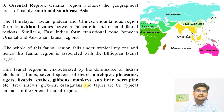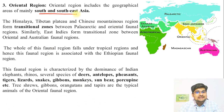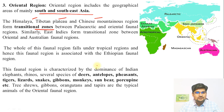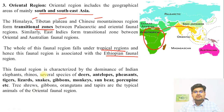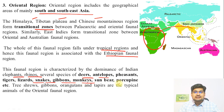The third region is the Oriental region. As said, orient means east, so South and Southeast Asia is included, with the Himalayan, Tibetan Plateau, and Chinese mountain regions and transitional zones between them. The whole of this faunal region falls under tropical and subtropical areas, and it is associated with the Ethiopian faunal region. This region is characterized by the dominance of Indian Elephants, Rhinos, Deer, Antelope, Lizard, Snake, Gibbons, and Monkeys.